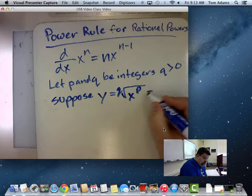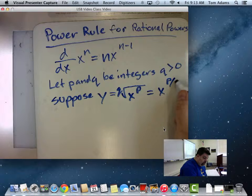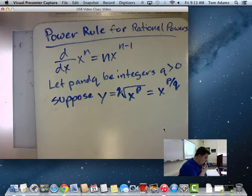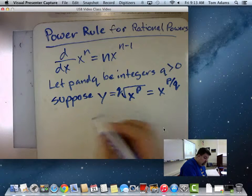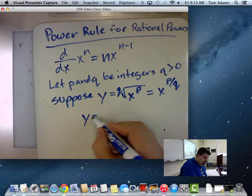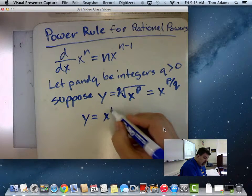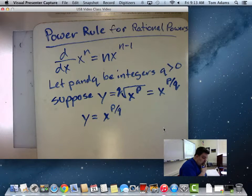which is really X raised to the P over Q, right? You guys remember all that stuff? So now, if that's the case, what we could do is we have Y is equal to X to the P over Q.